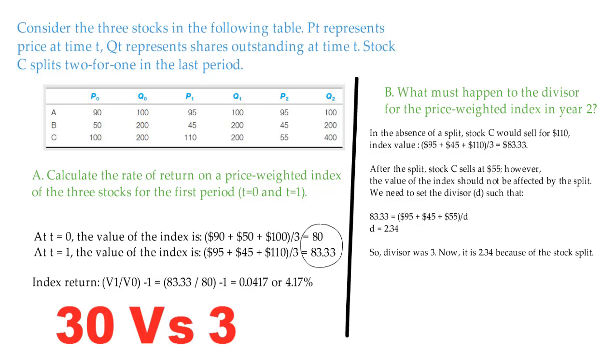After the stock split, stock C sells at $55. However, the value of the index should not be affected by the split. We need to set the divisor as unknown, D, such that 83.33 equals the sum of all these new prices divided by D. Now, if you solve for D, you get divisor 2.34.